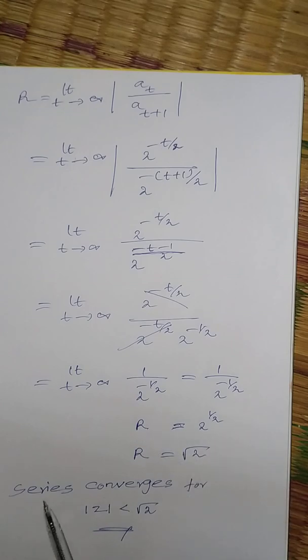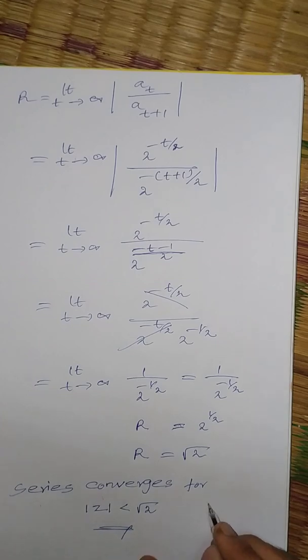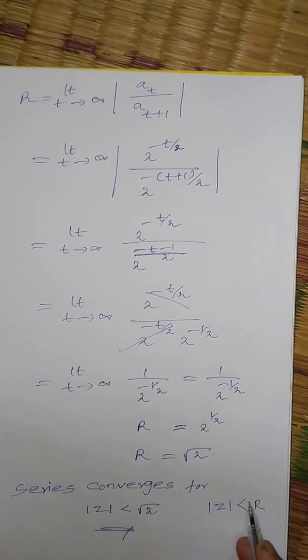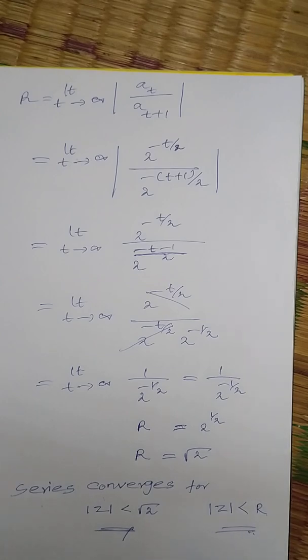Bringing the numerator 2 power 1 by 2, it is nothing but root of 2. This is the radius of convergence. The series converges for mod z less than root 2. Because we have, as per definition, mod z strictly less than r. That is very important. Thanks for watching video. If you want to make a comment, please send me a comment. Thanks for watching. Thanks a lot.